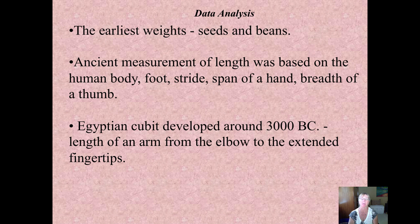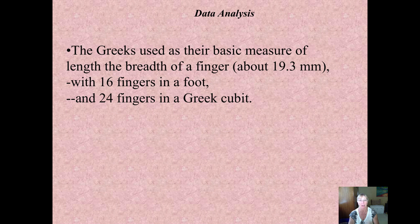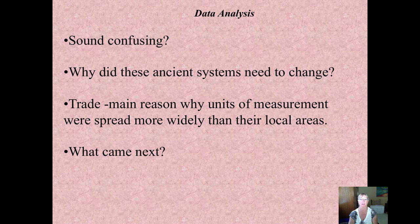The cubit, which is mentioned in the Bible, was developed 3,000 years BC and it's the length of your arm from the elbow to your fingertips. And of course there were other measurements such as the Greeks using 16 fingers in the foot and 25 fingers in a Greek cubit.